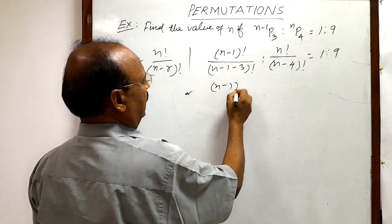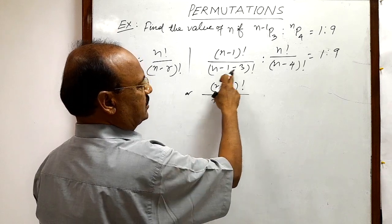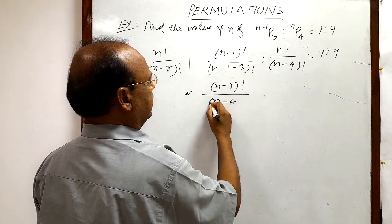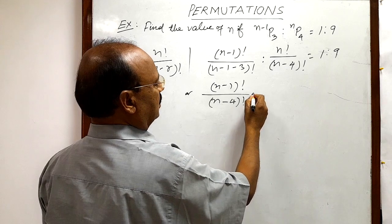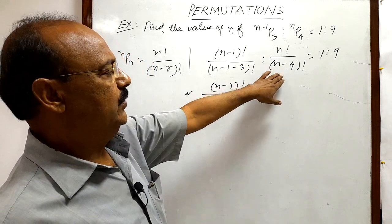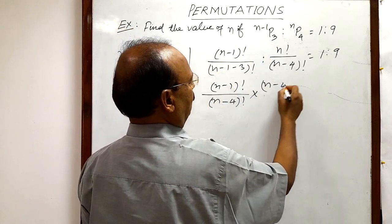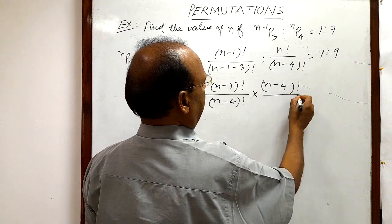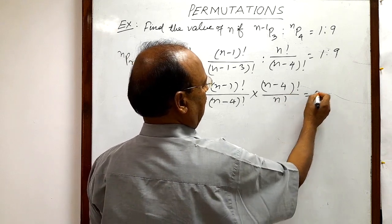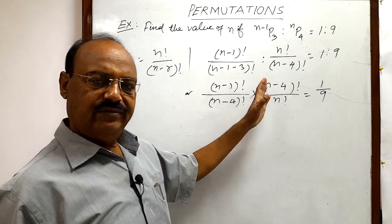...divided by (n-1) minus 3, that is (n-4)! We are converting this ratio sign into multiplication, so we will write this denominator in the numerator. So this will be (n-4)! divided by n!. This is equal to 1/9.